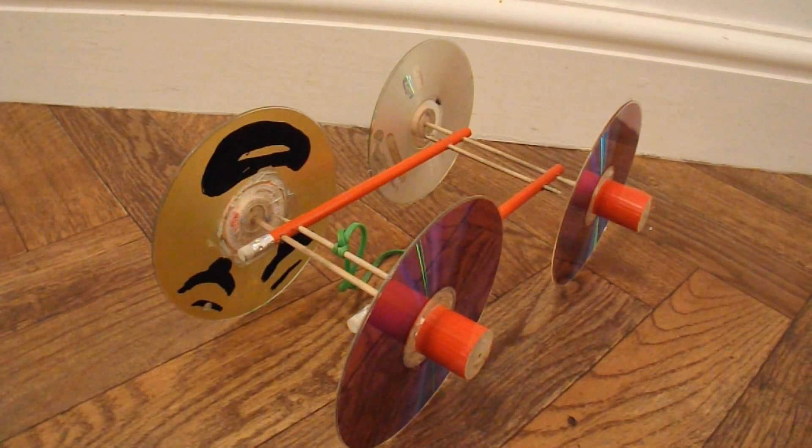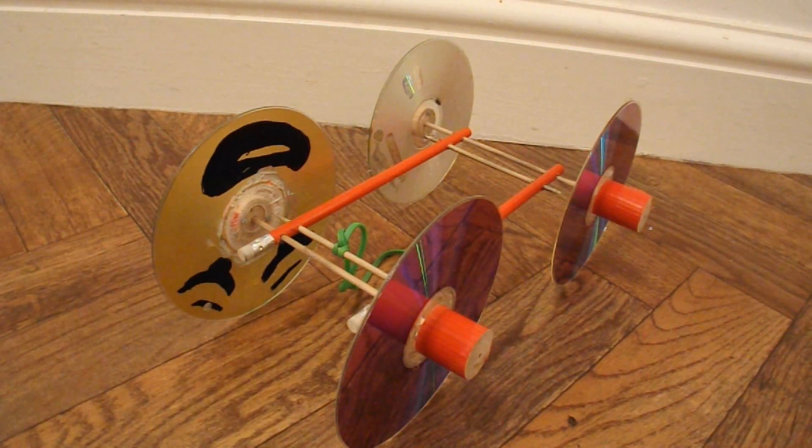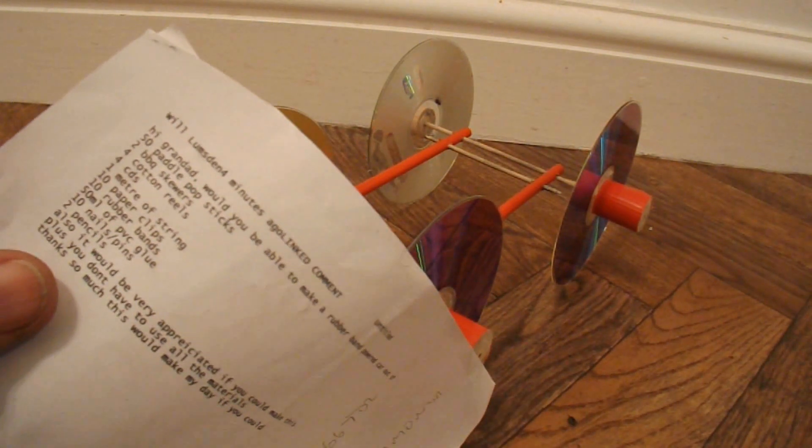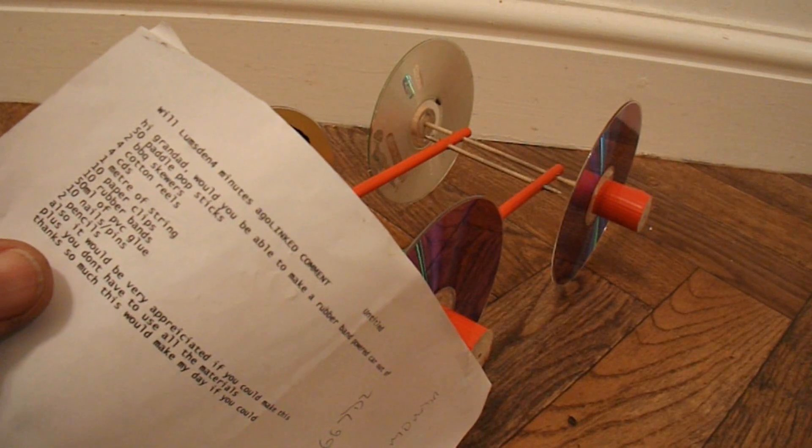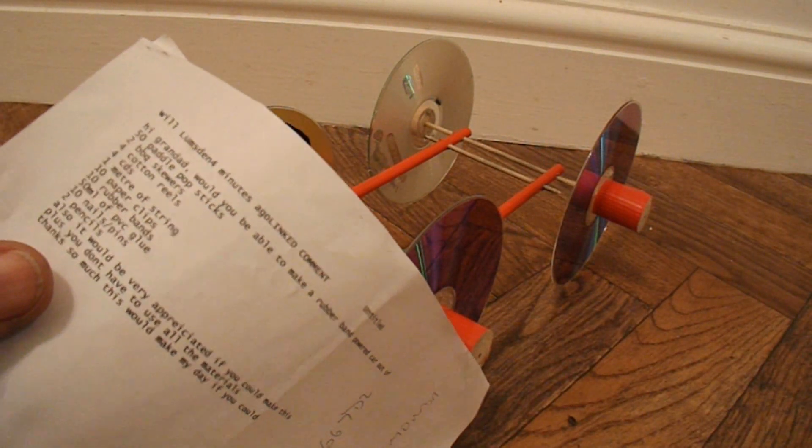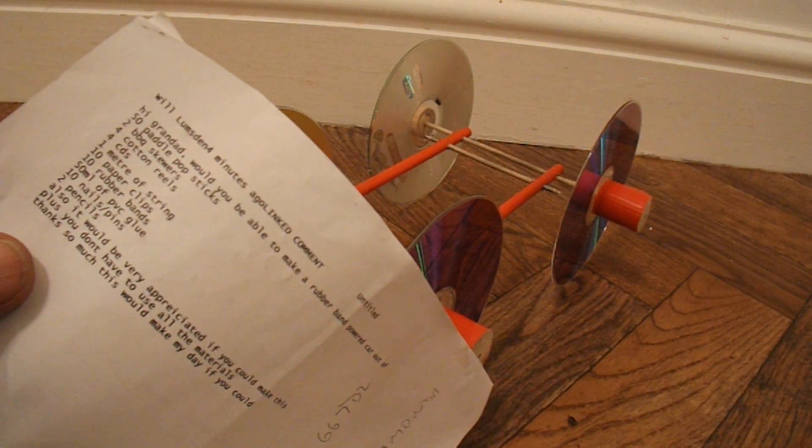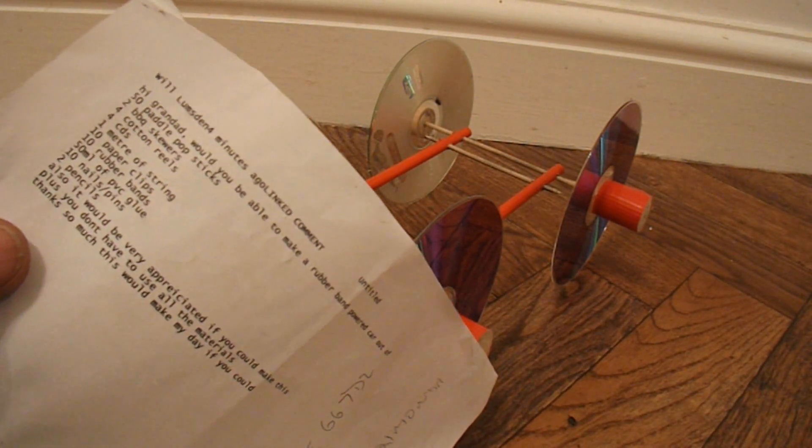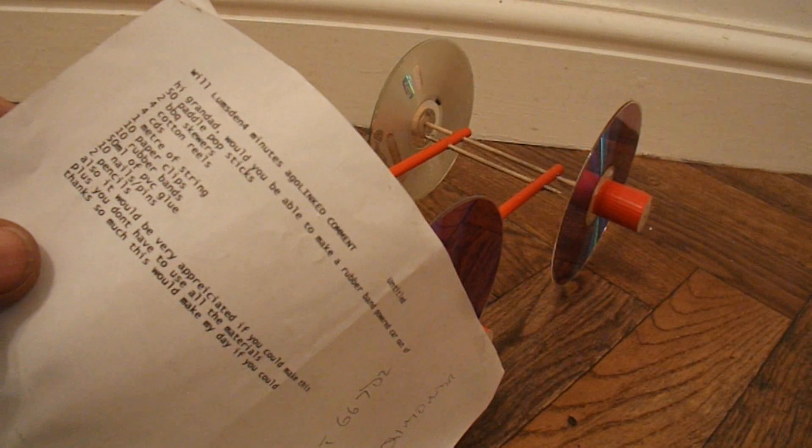Summary time. What have we got here? Well, we've got a little project that was originally going to be 50 paddle pop sticks, two barbecue skewers, four cotton reels, four CDs, one metre of string, ten paper clips, ten rubber bands, 50 millilitres of PVC glue, ten nails or pins and two pencils.